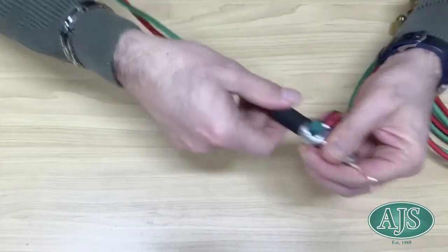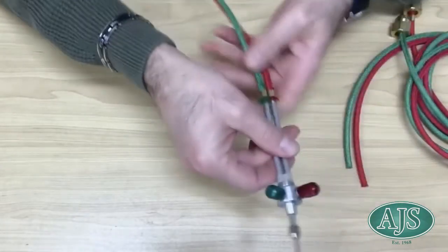The first step is to unscrew the black handle anti-clockwise on the body of the torch.